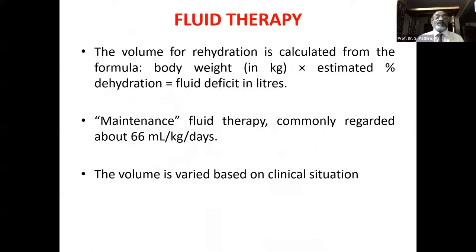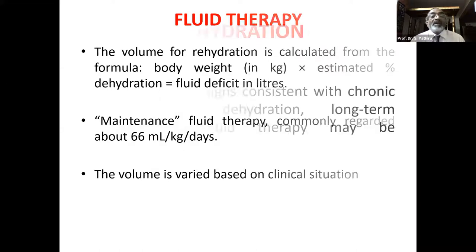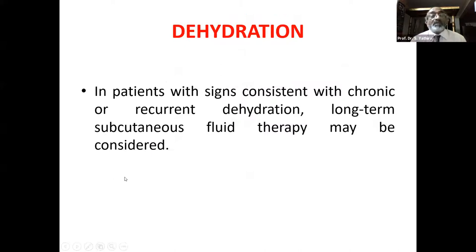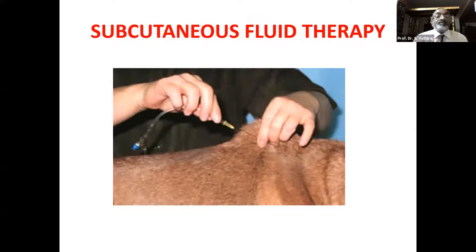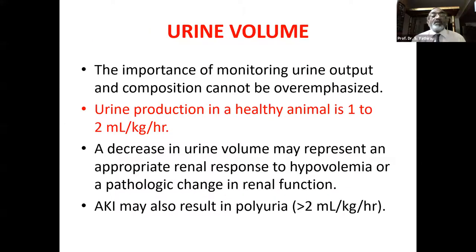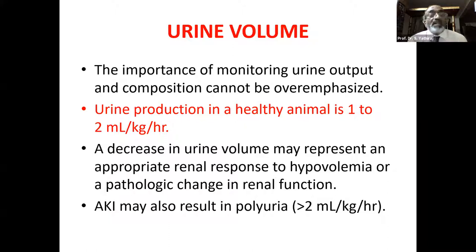Calcium and phosphorus management: calcitriol at 2 to 3 ng/kg every 24 hours for renal secondary hyperparathyroidism. Phosphate binders are very important in hyperphosphatemia — including aluminum, calcium, and lanthanum salts. Aluminum hydroxide or aluminum carbonate at 30 to 90 mg/kg/day divided with meals. Calcium acetate or calcium carbonate at 60 to 90 mg/kg/day. Calcium carbonate combined with chitosan — preparations like Epakitin — acts as intestinal phosphate binding, as chitosan absorbs phosphorus.